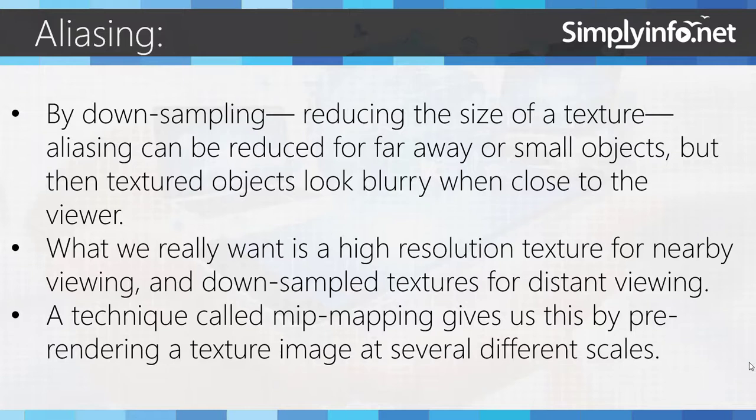By downsampling — reducing the size of a texture — aliasing can be reduced for far away or small objects. But then textured objects look blurry when close to the viewer. So what we really want is a high resolution texture for nearby viewing and a downsampled texture for distance viewing.